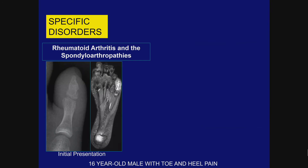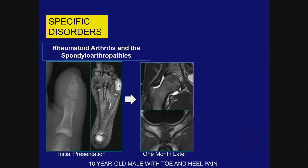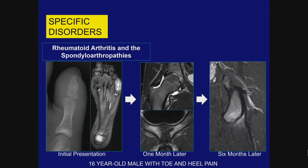Herein lies the problem. Here's a 16-year-old male with toe and heel pain as the initial presentation. We can see heel pain related to enthesitis, soft tissue swelling, a sausage digit, and extensive marrow edema. One month later there is hip synovitis and perisymphyseal bone destruction. Six months later, enthesitis involving the ischial tuberosity. So there is an evolving picture, and in this case the spine and sacroiliac joints were not involved.